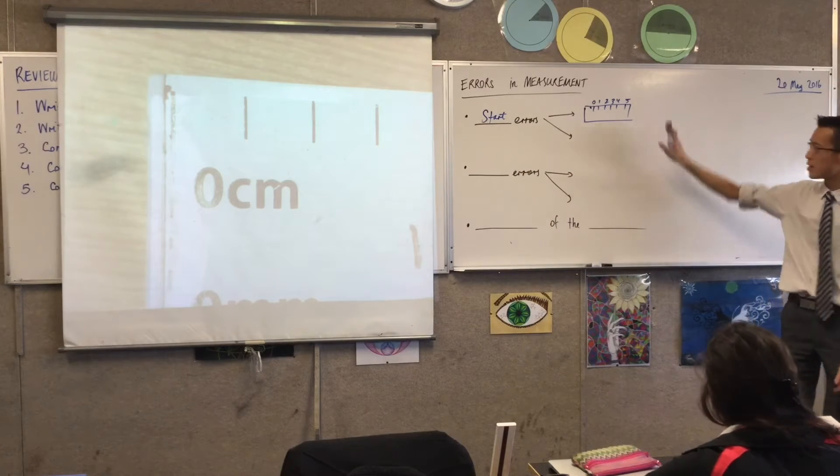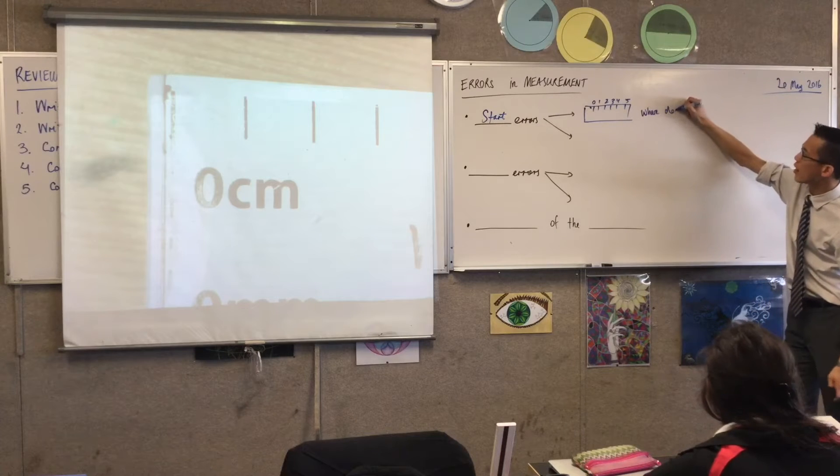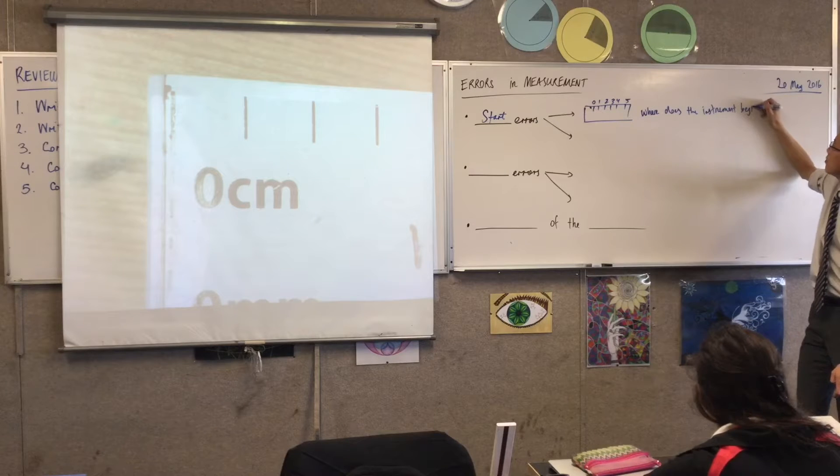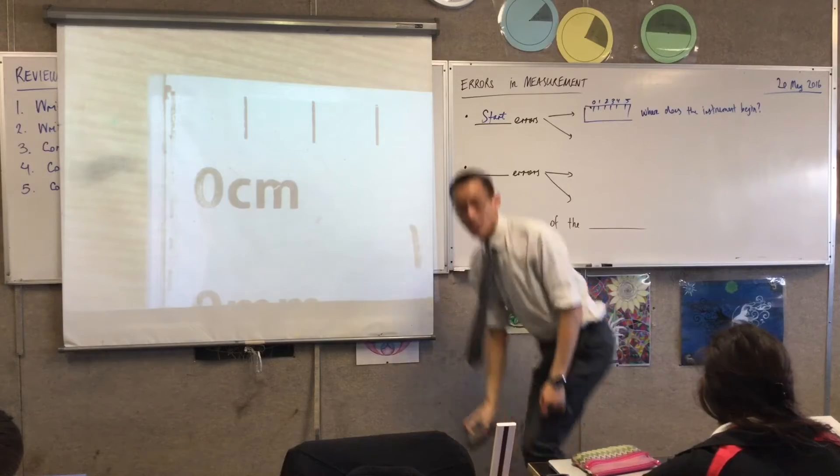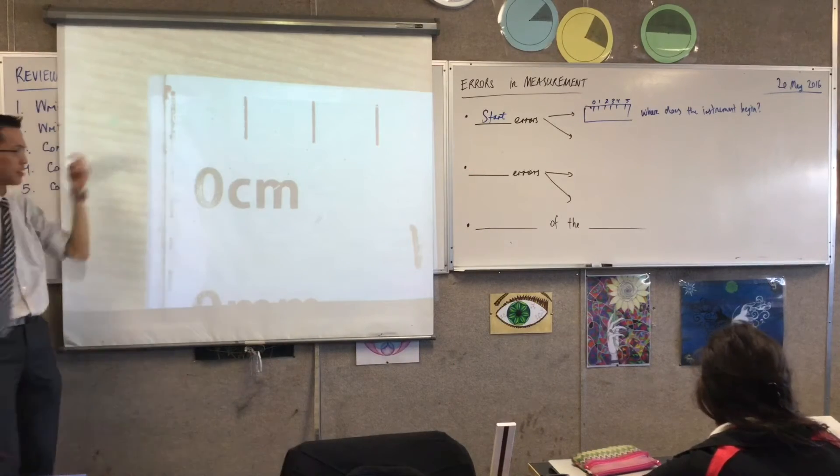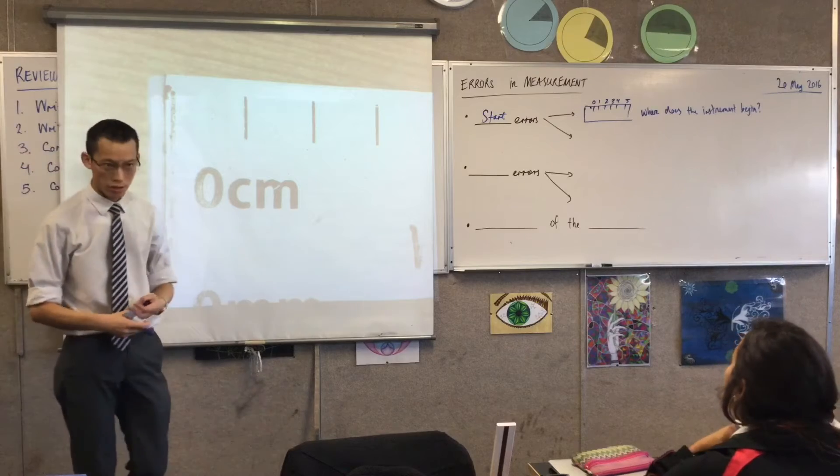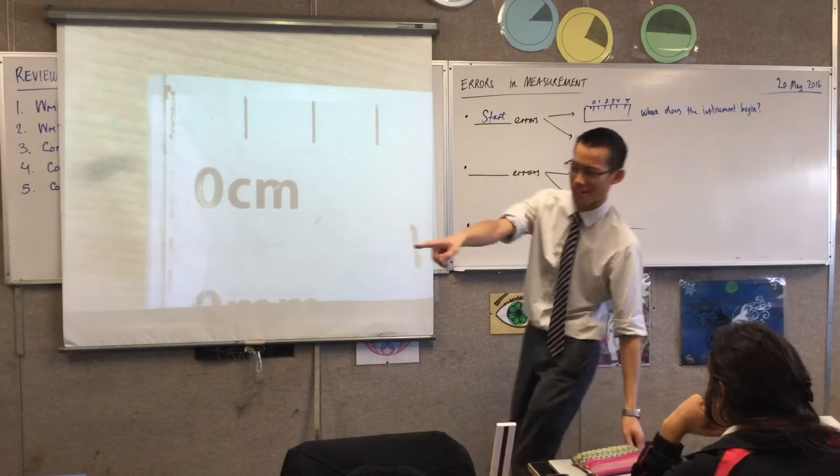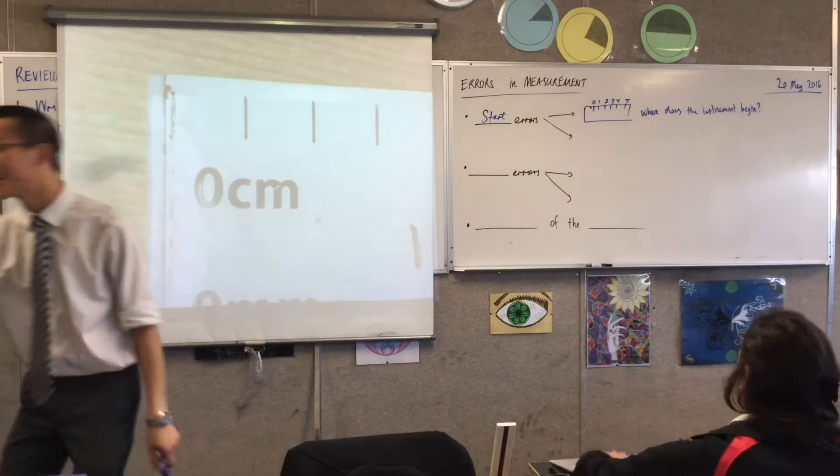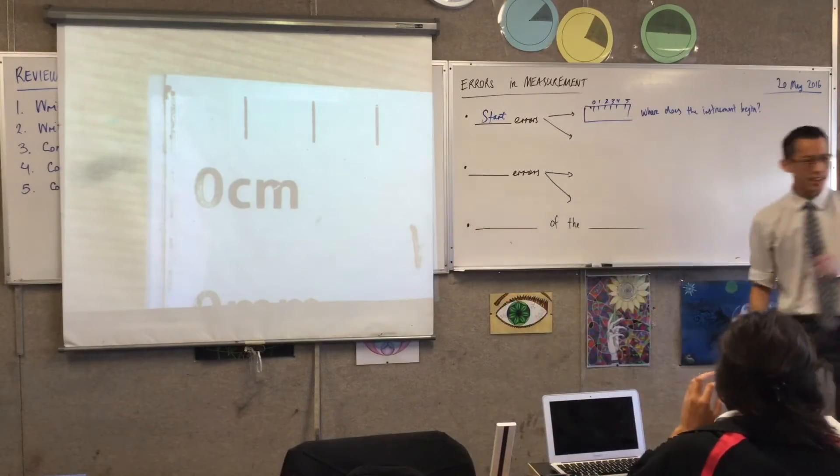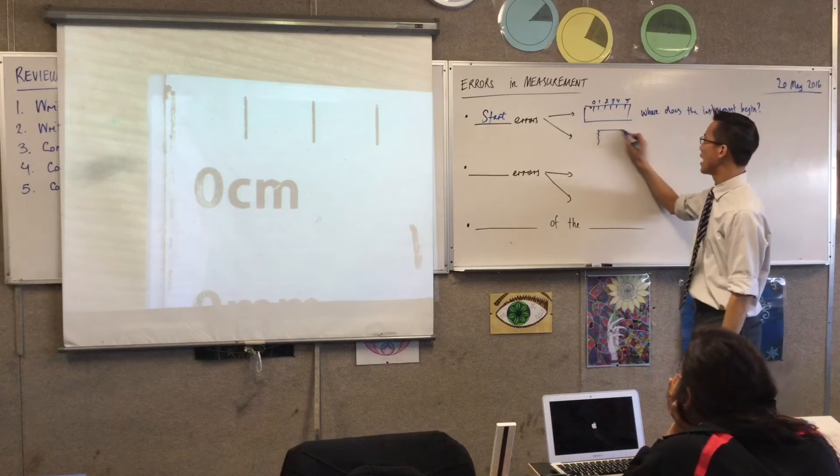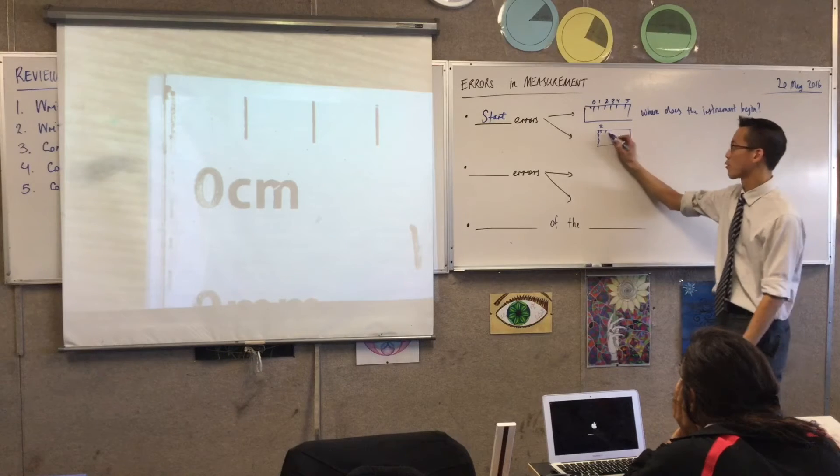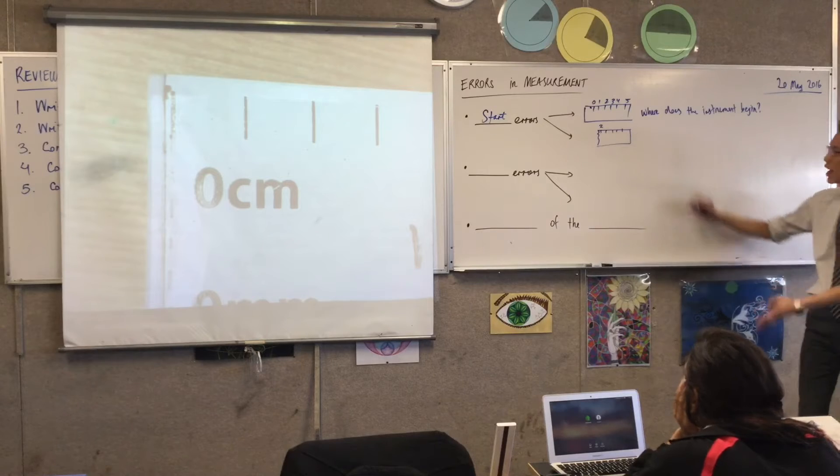If your ruler, as most rulers don't do, I think carpentry rulers are probably the exception. If your ruler doesn't start at zero, then a start error can creep in if you don't pay careful attention to that. So where does the instrument begin is what this error is about. Now, secondly, and related, in this case, my ruler is intact, but frequently measuring instruments are not going to be intact, and there's going to be damage. So here's the diagram I might draw. If I have a ruler, and it's going to have... Is yours intact? Completely gone. Show me. There are no markings. This is a different kind of problem, so I'll talk about that in a second.